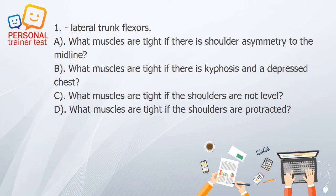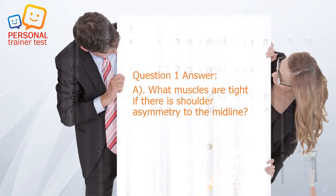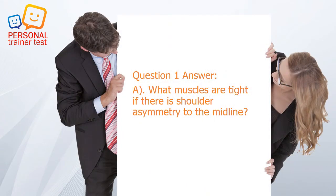Question 1. A. What muscles are tight if there is shoulder asymmetry to the midline? B. What muscles are tight if there is kyphosis and a depressed chest? C. What muscles are tight if the shoulders are not level? D. What muscles are tight if the shoulders are protracted? Answer: A. Lateral trunk flexors are tight if there is shoulder asymmetry to the midline.